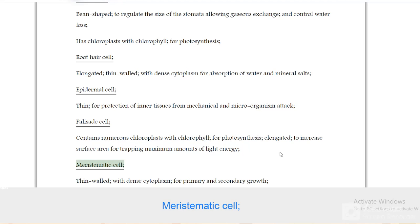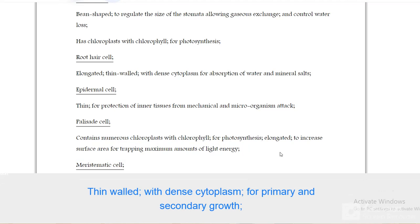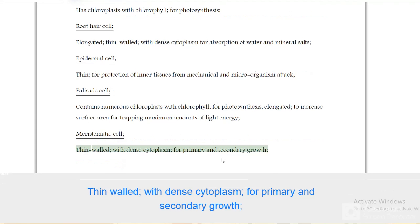Meristematic cell is thin walled with dense cytoplasm for primary and secondary growth.